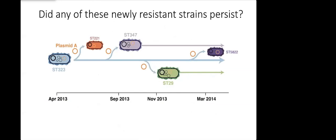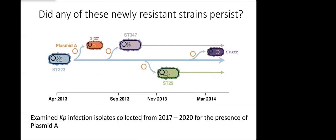This is our hypothesis. ST323 persists throughout the study period. We see occasional transfer of the plasmid into new strains. Two of those strains then go on to cause further outbreaks in the hospital and infect other patients. We wanted to know if any of these newly resistant strains persisted beyond the end of our study.